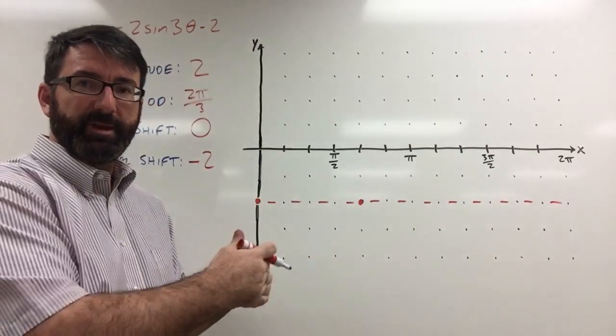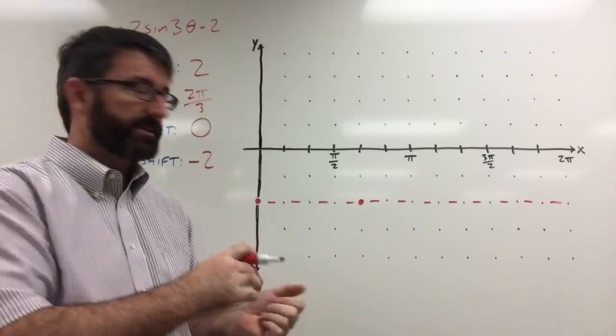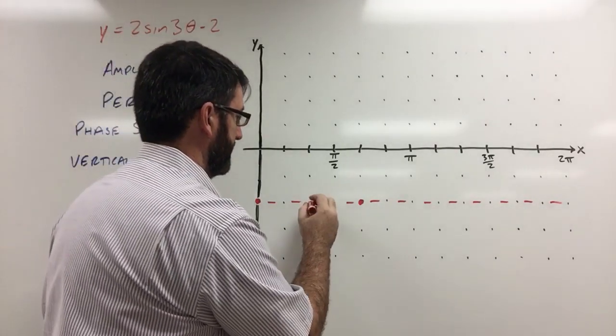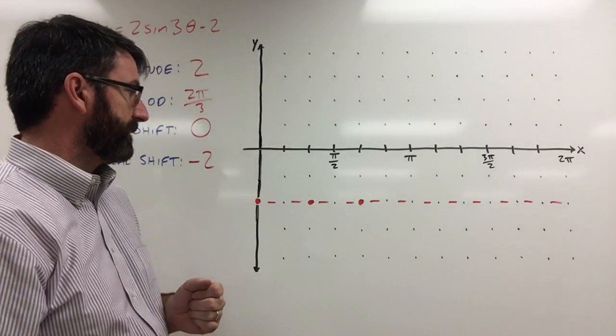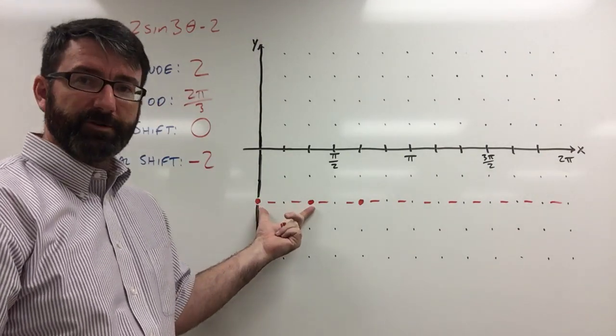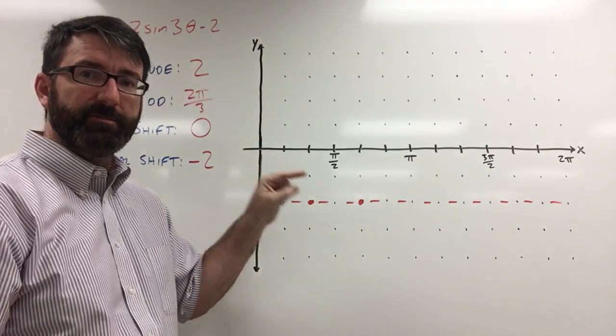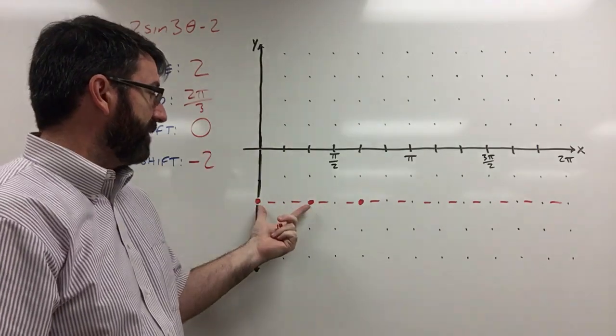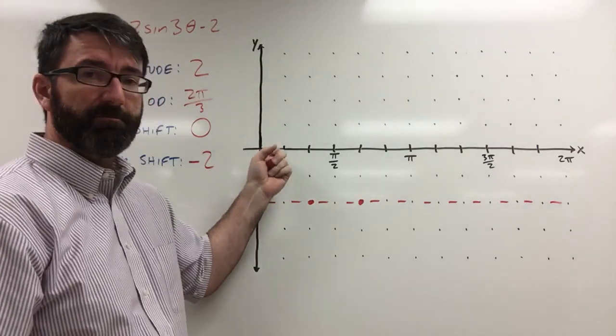Halfway between the beginning and end of a period with a sine function, we're going to cross the midline again. We're going to cross the midline right there. And then halfway between these first two points, sine always starts at the midline and goes up. So halfway between these two points, we're going to reach our maximum.